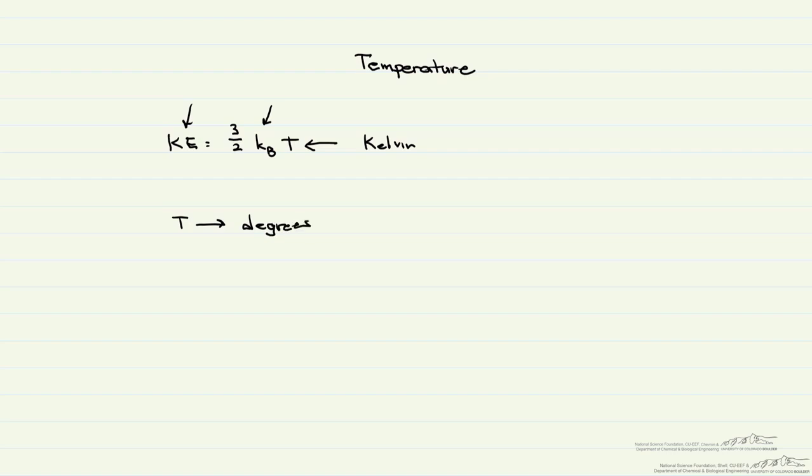There are a number of different temperature scales that can be used and the most familiar ones for us are probably degrees Celsius and degrees Fahrenheit. We're gonna start with Celsius. For degrees Celsius, we designate the freezing point to be equal to zero degrees C and we designate the boiling point to be equal to 100 degrees C.